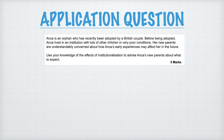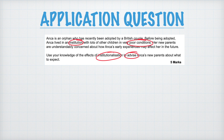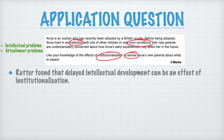Our second question is an application question. It came up in one of the early AQA papers, around 2017. It's a story about an orphan recently adopted by a British couple — the adoptee, Anka, has been in an institution for a lot of her life and we need to advise the parents about what to expect. Like the previous question, we're going to focus on intellectual problems and attachment problems. I would definitely start with Rutter and the fact that he found delayed intellectual development can be an effect of institutionalization.